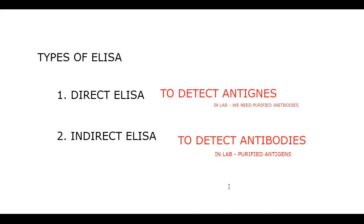In direct ELISA, we are trying to detect the antigens of the patient, so we need purified antibodies in the laboratory — monoclonal antibodies produced by hybridoma technology. Let me give a brief overview of hybridoma technology — how we produce laboratory antibodies.